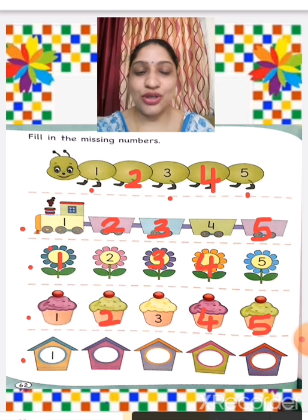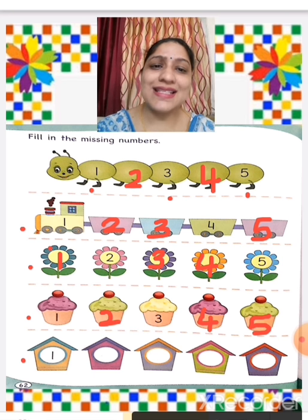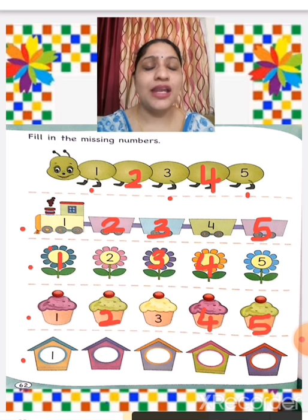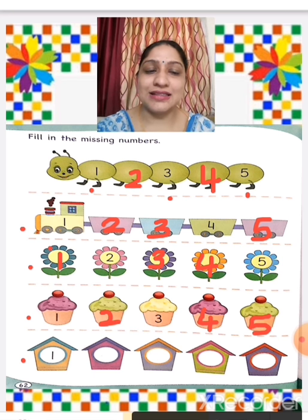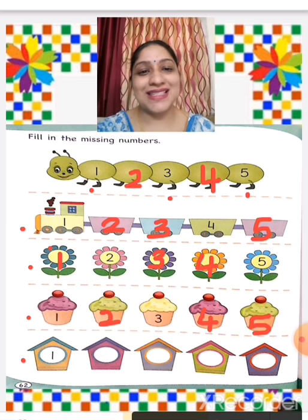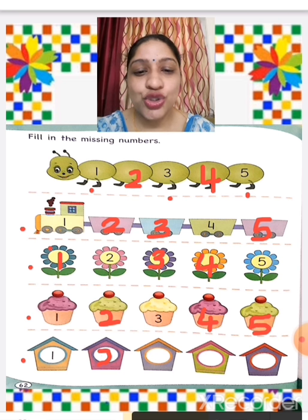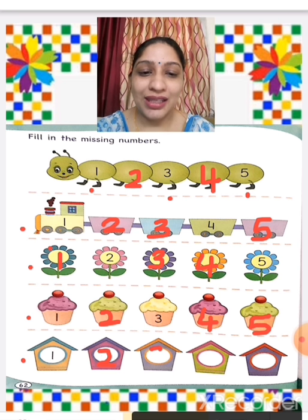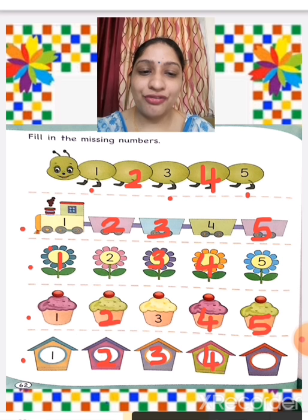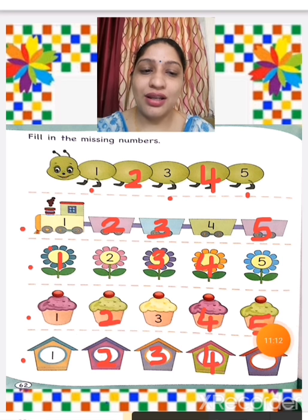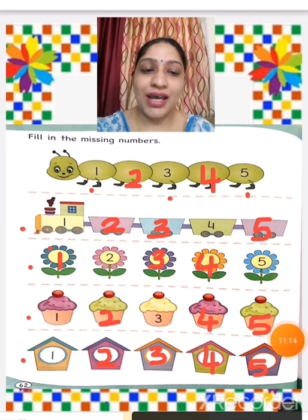The next row has only 1 written, so we are going to write the other missing numbers: 2, 3, 4, 5.